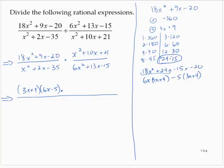Now the x² + 10x + 21, that's easier. x plus 3 times x plus 7. In the denominator, x² + 2x - 35, that one's easier. That's x minus 5 times x plus 7.